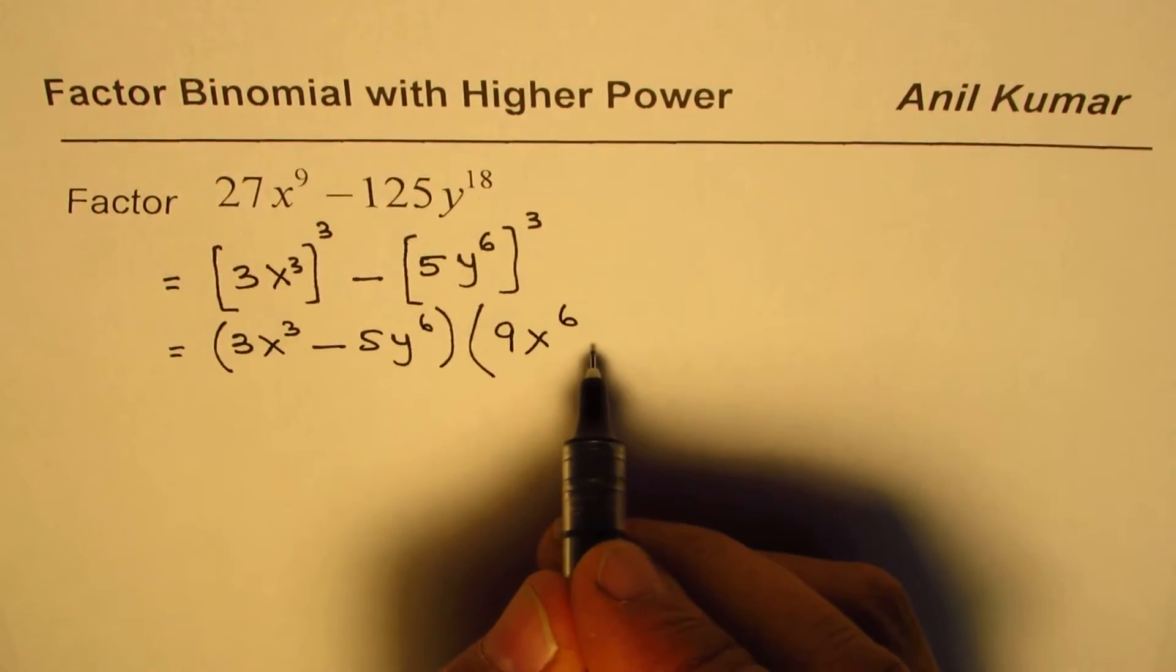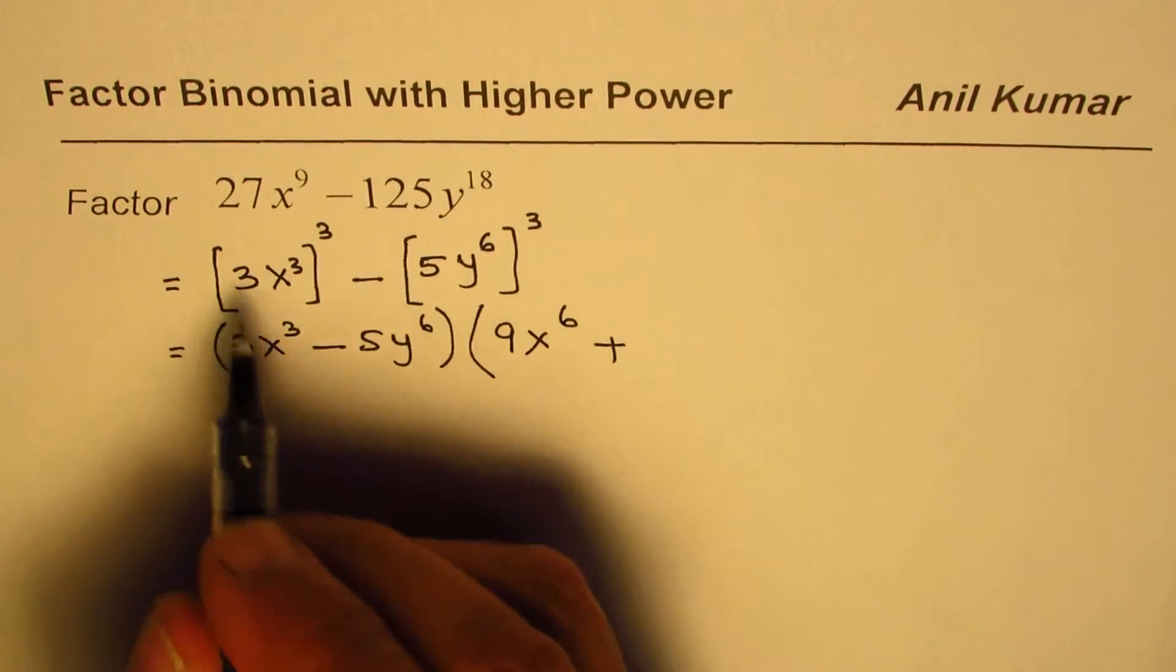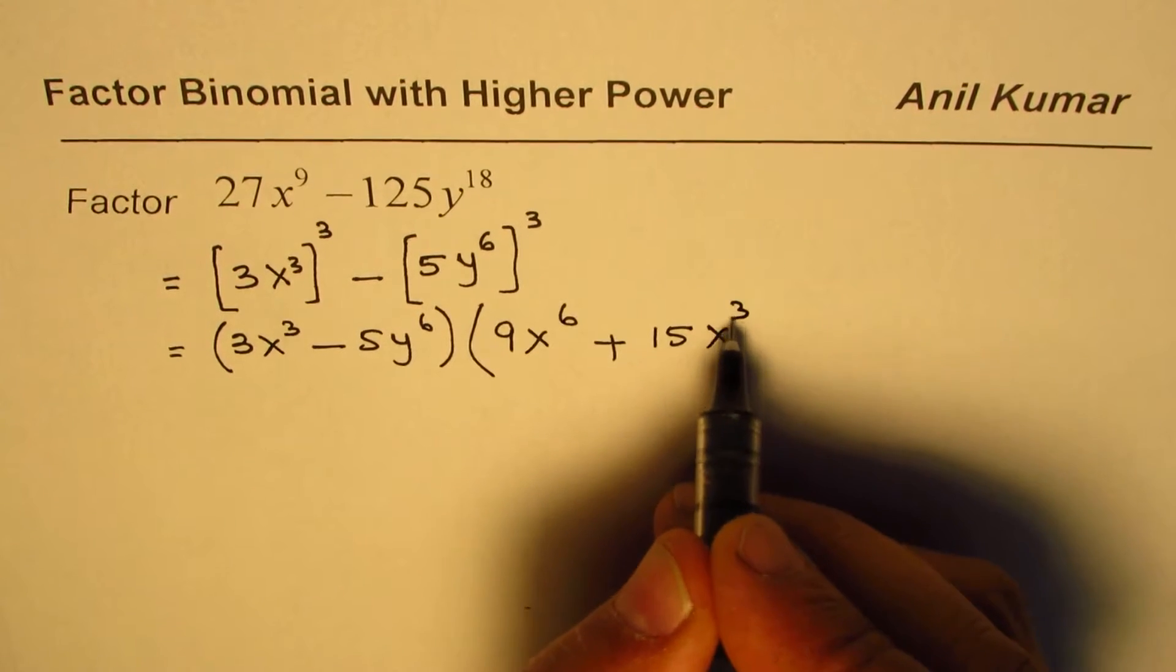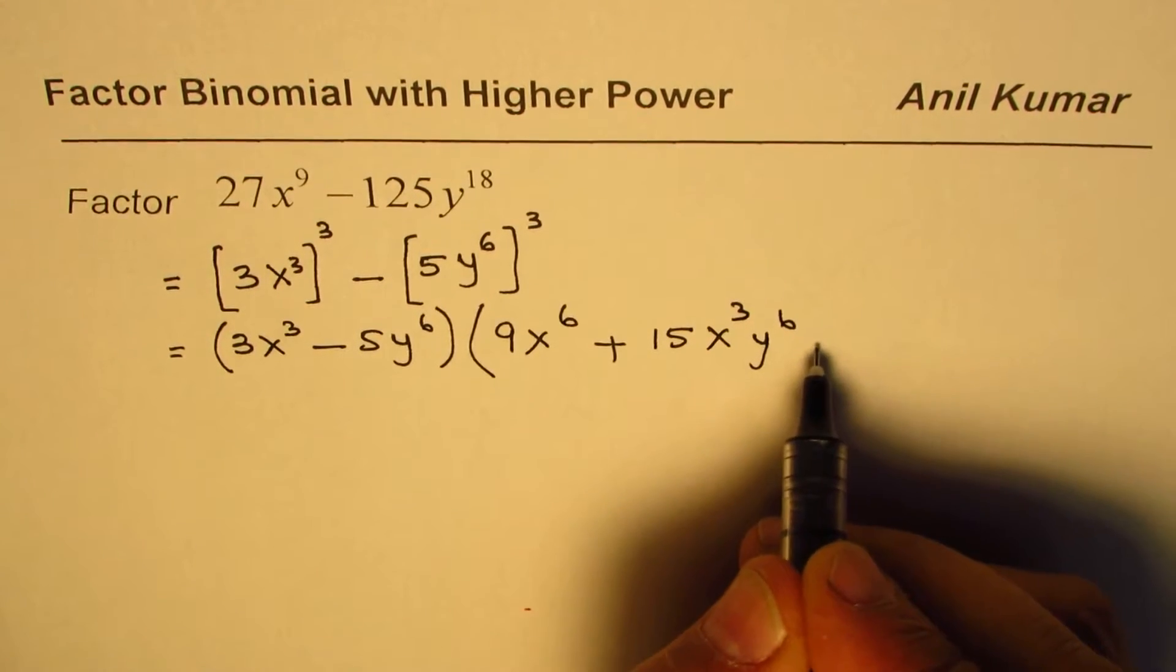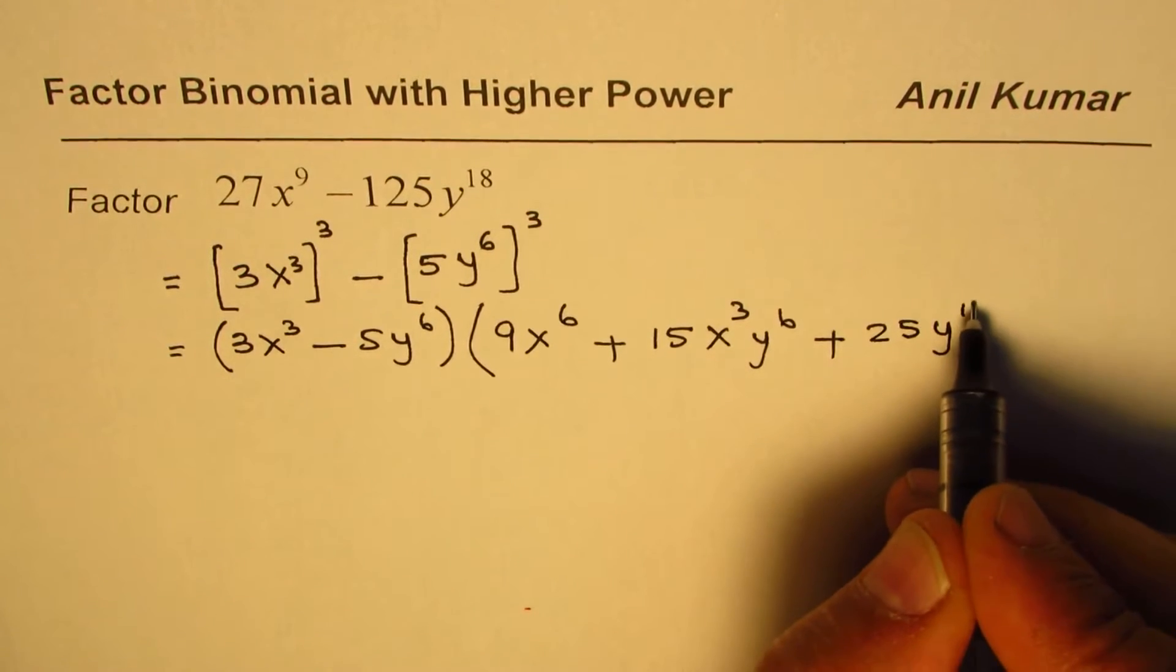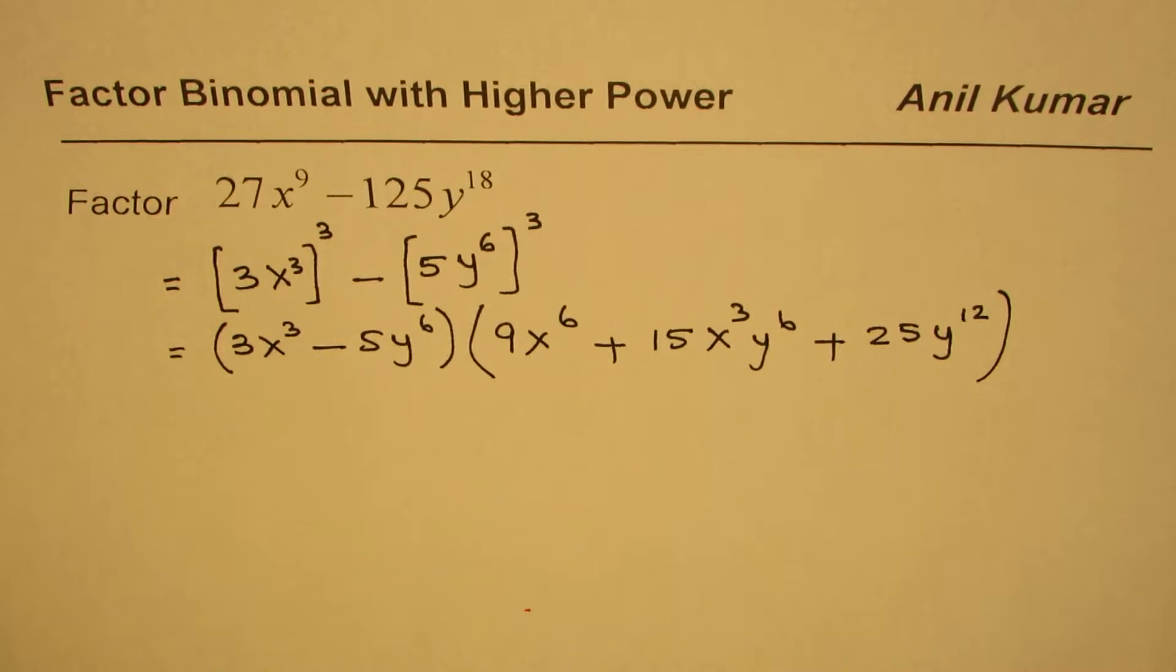Plus, multiply these two: 5 times 3 is 15x cubed y to the power of 6, plus the square of the second term, which is 25y to the power of 12. So that is how you can apply the formula of a cubed minus b cubed and factor.